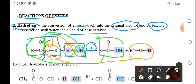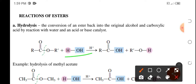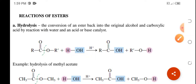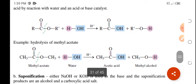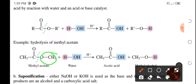So hydrolysis would just be the reaction with water in a particular catalyst to produce its alcohol and acid part. Let's have the example: hydrolysis of methyl acetate. So the methyl part is the alcohol part and the acetate part is the carboxylic acid part.